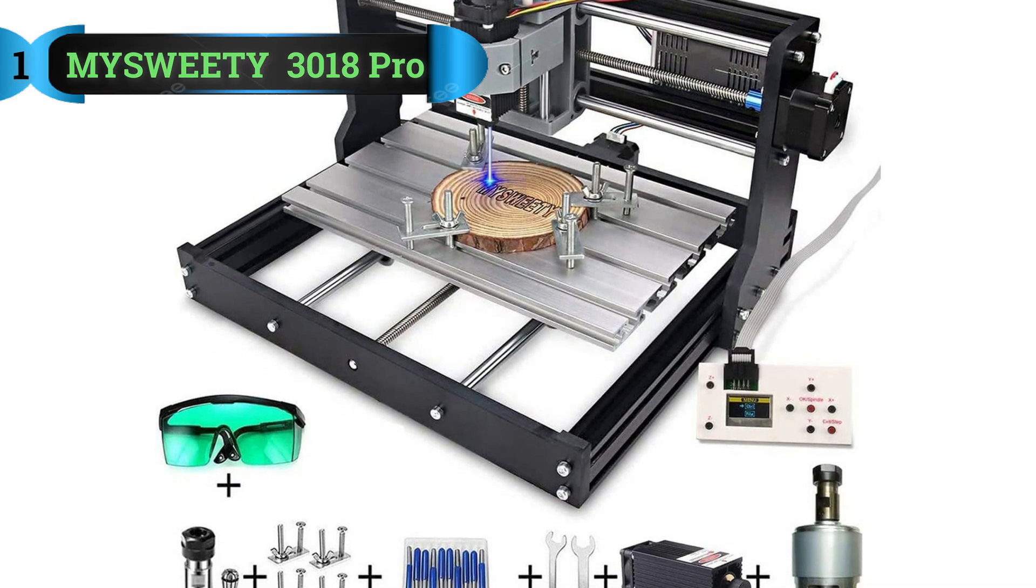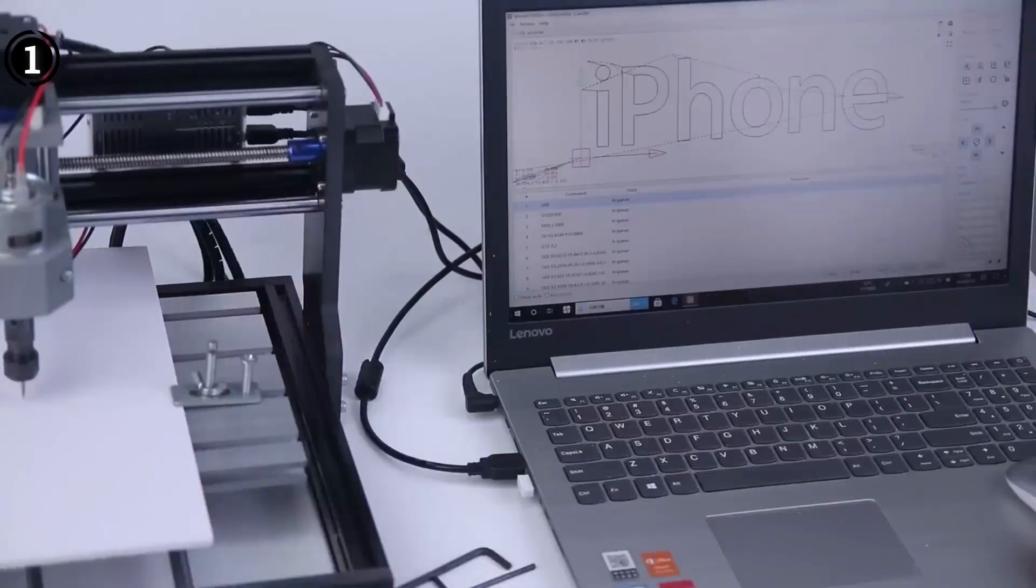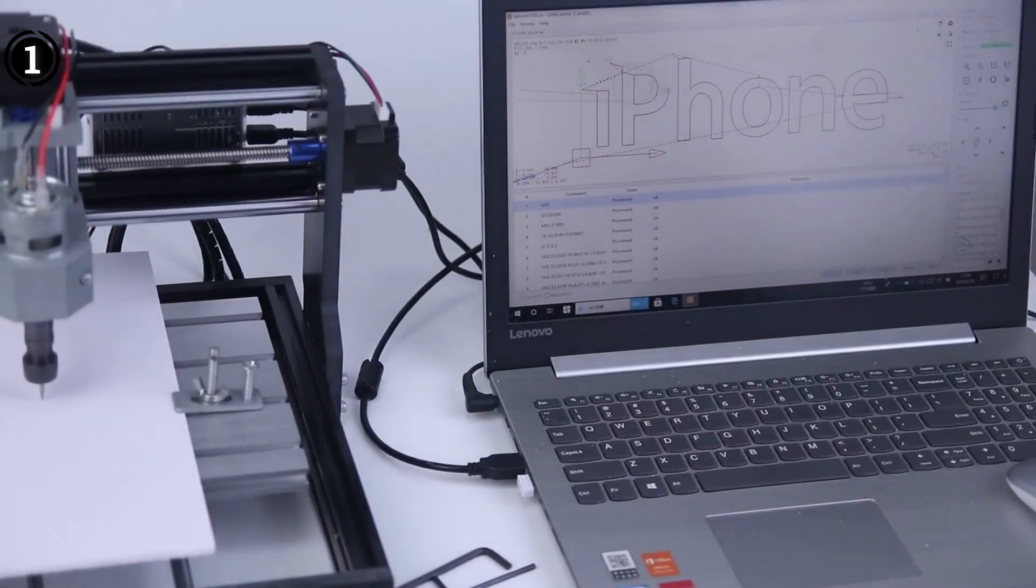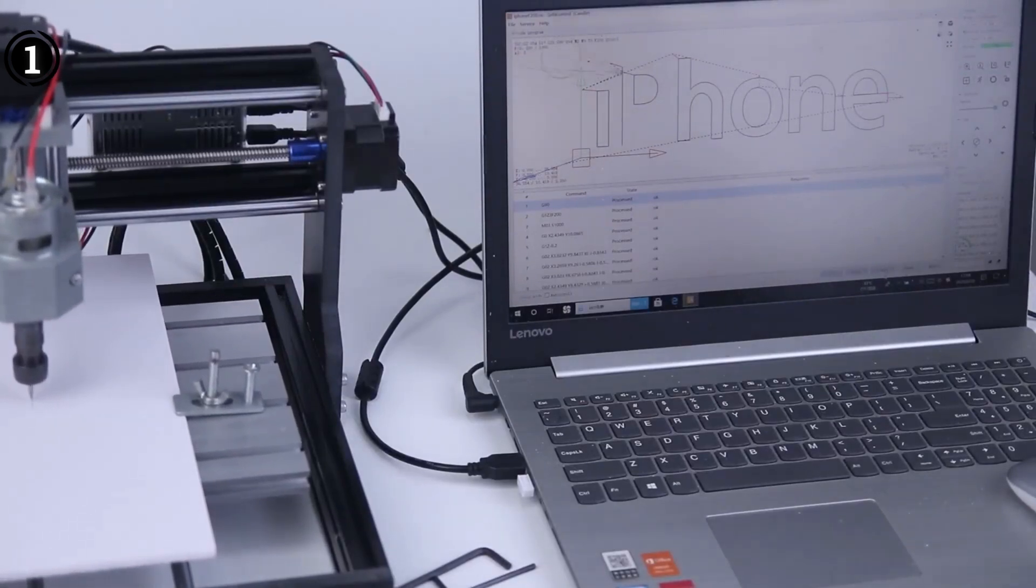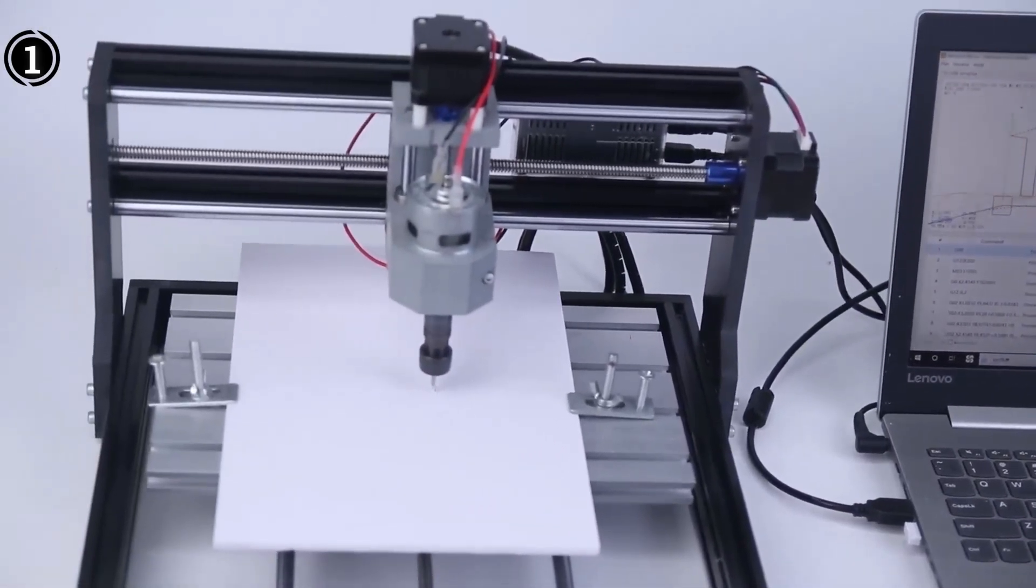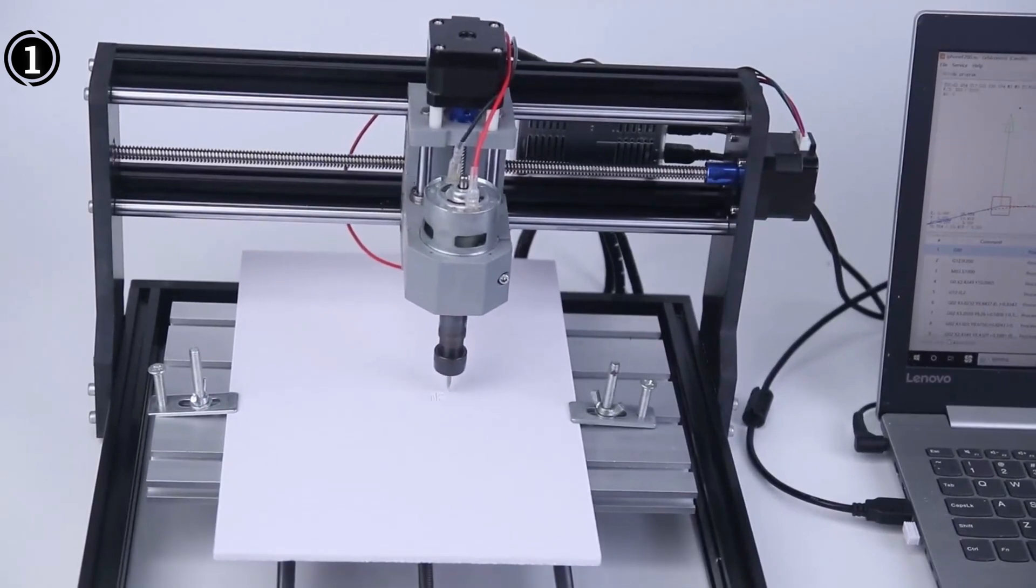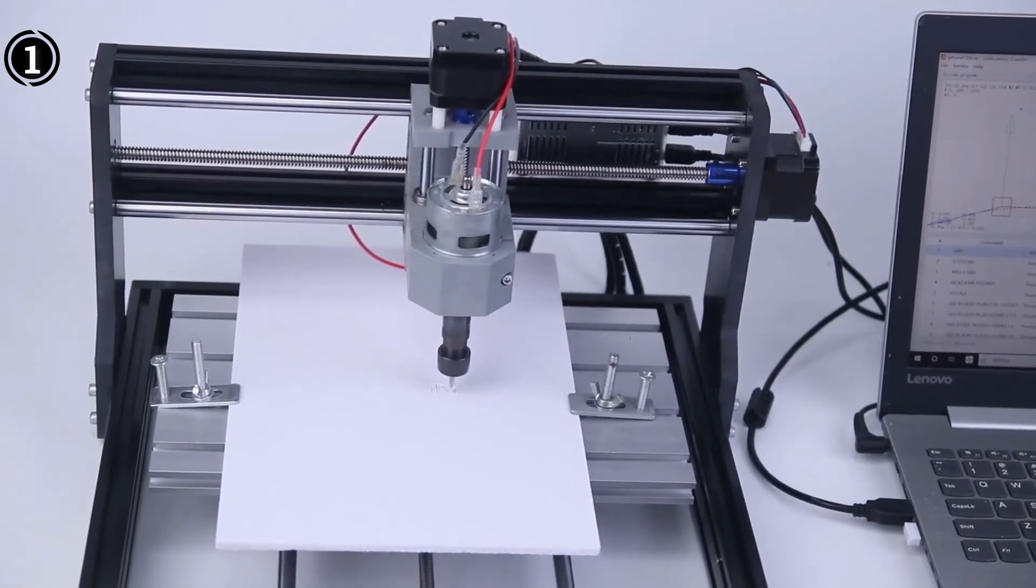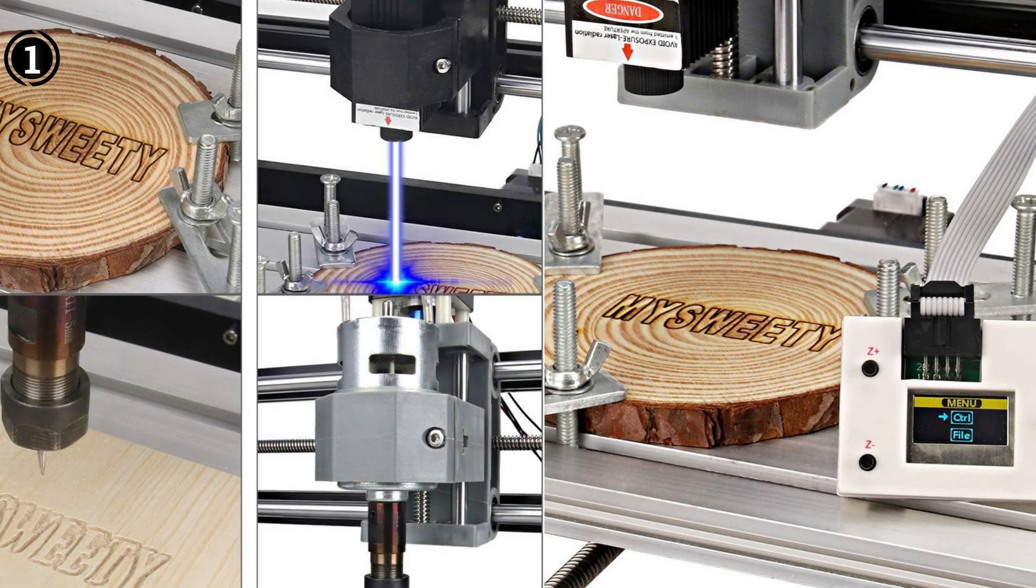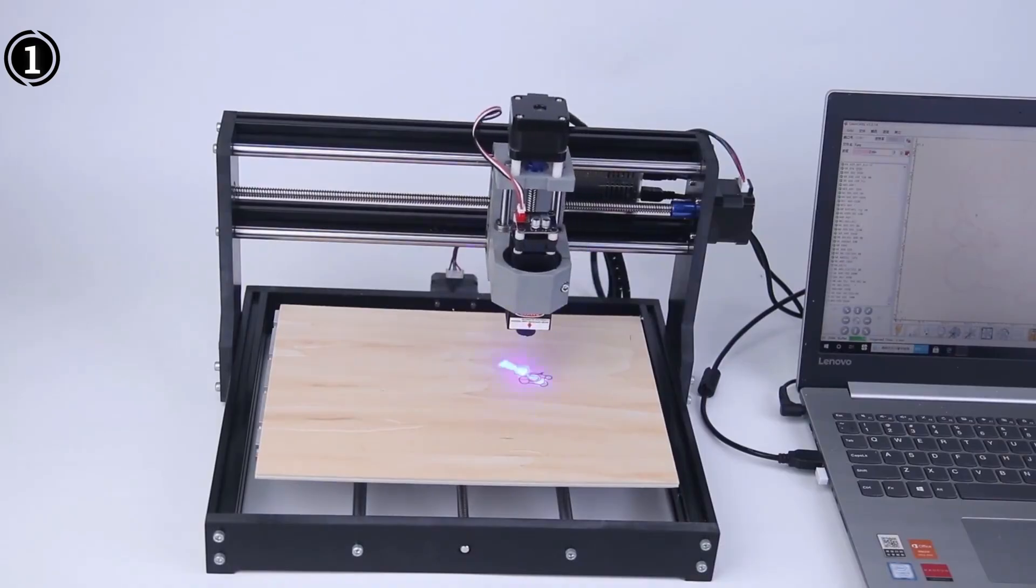MySuite 2 in 1 5500mW CNC 3018 Pro Engraver machine. After extensive research, we confidently assert that the MySuite 2 in 1 5500mW CNC milling engraving machine ranks among the finest CNC milling machines tailored for beginners. This machine serves as an excellent platform for learning the fundamentals of CNC machining due to its transparent, open design, which provides a clear view of the effects of any adjustments made to the axis.